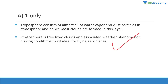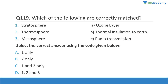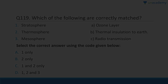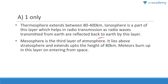Regarding atmosphere layers: the stratosphere contains the ozone layer — correct. Thermosphere does not provide thermal insulation; that is wrong. Mesosphere is not responsible for radio transmission — thermosphere is. The mesosphere is the third layer, lying above the stratosphere up to 80 km, where meteors burn up. The thermosphere extends from 80 to 400 km; the ionosphere is a part of the thermosphere that helps in radio transmission.